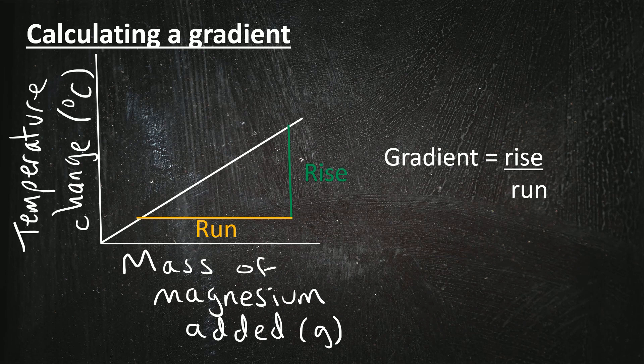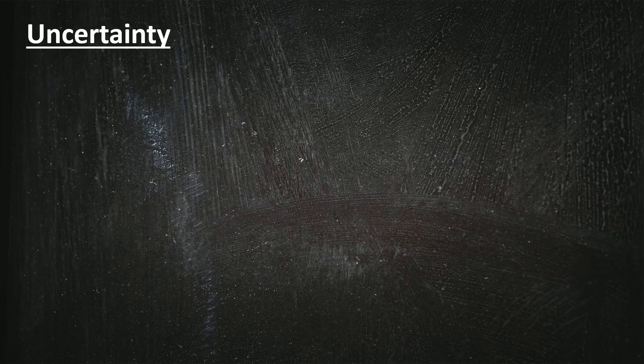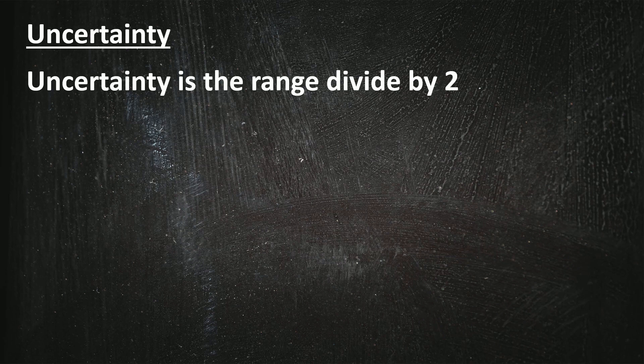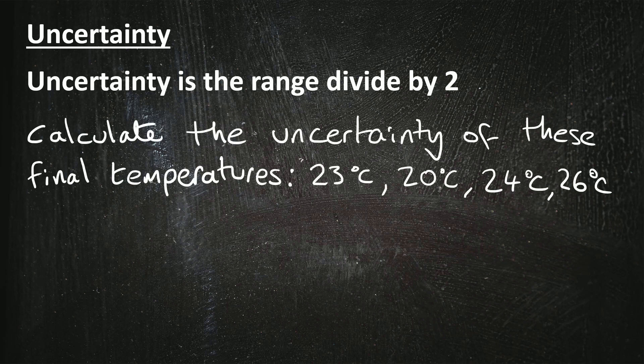One of the math skills that not many candidates got right last year was calculating the uncertainty. And the uncertainty is the range divided by two. So for example, the question might say calculate the uncertainty of these final temperatures, and we've got 23 degrees, 20 degrees, 24 degrees and 26 degrees. So first of all the range is the highest takeaway the lowest, so that is 6 degrees. And then we simply divide it by 2, so the uncertainty is 6 divided by 2 which is 3 degrees.